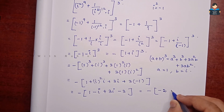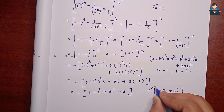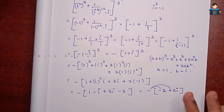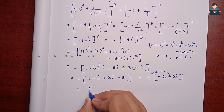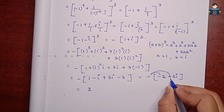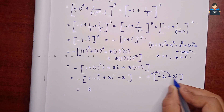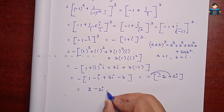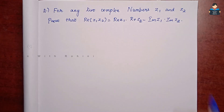So the final answer for the first sum is minus 2 plus 2i, here is minus 2i.